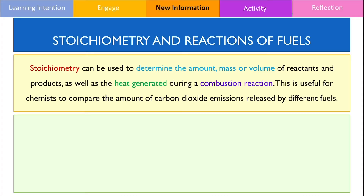Stoichiometry is a section in chemistry that involves relationships or ratios which allows us to find the number of moles, the mass, the volume of reactants and products, as well as the heat generated during a combustion reaction. This is useful knowledge for chemists because it allows them to compare the amount of carbon dioxide emissions released by different fuels.